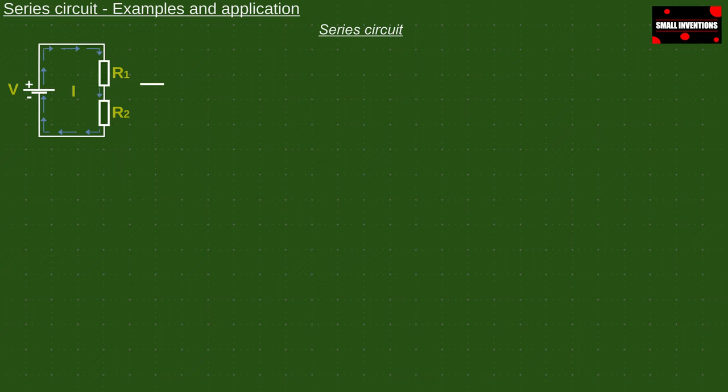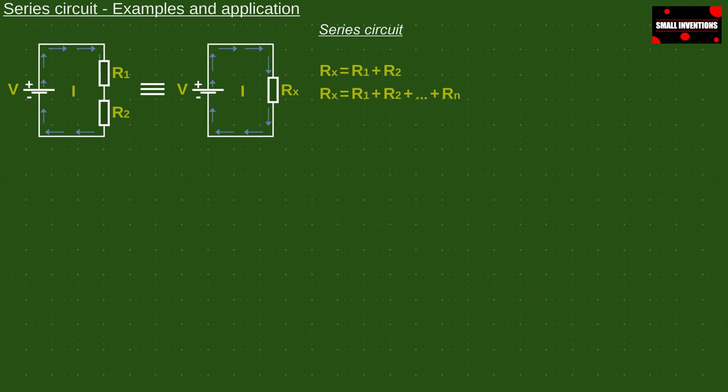Thus, we can present our circuit as just one resistor that will represent the sum of resistors R1 and R2. In case there are several resistors in series, we just simply add them up and get the total resistance of the series circuit, as shown by the official equation.